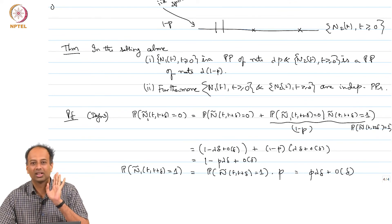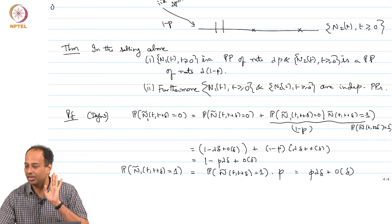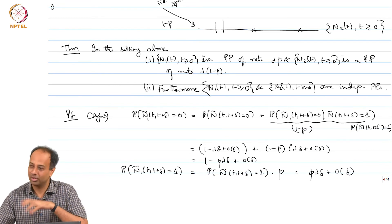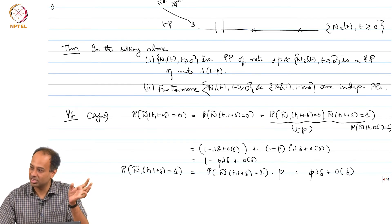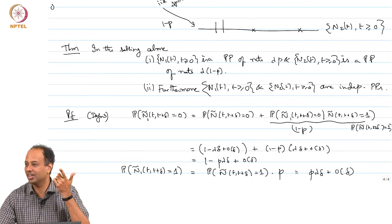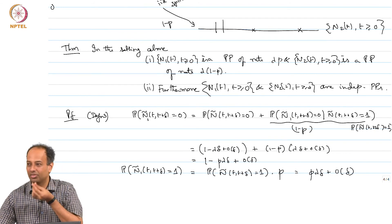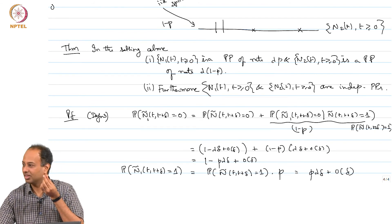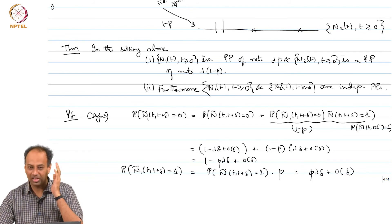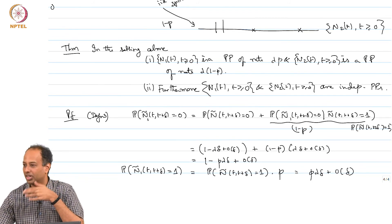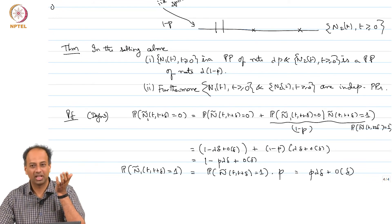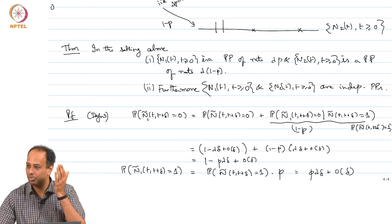Now you have to prove the stationary independent increments property (SIP) and the independent increments property (IIP). SIP and IIP follow because the original process has them, and the Bernoulli coin tosses are independent in any of these little slots. If an arrival is sent up or down it is independent of what happened in previous slots, from which you can prove SIP and IIP for the up and down processes separately.